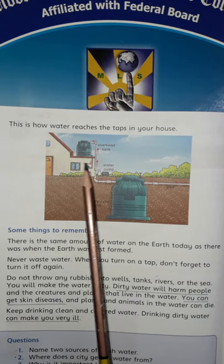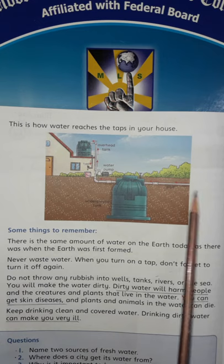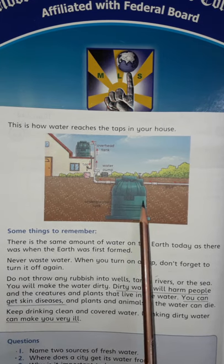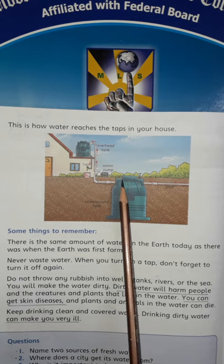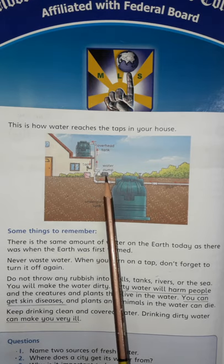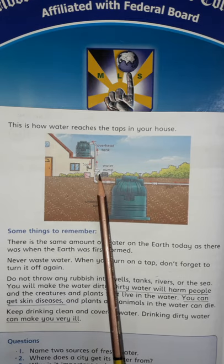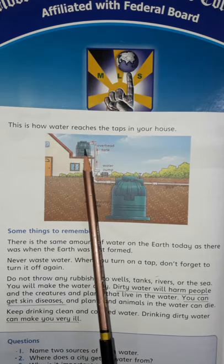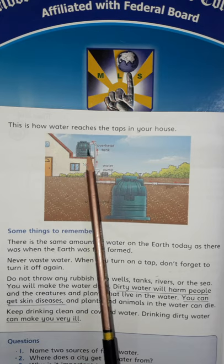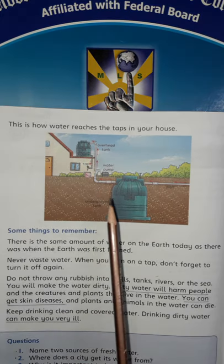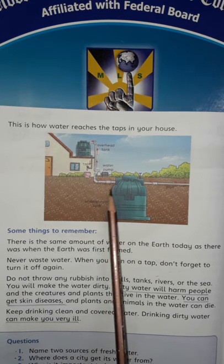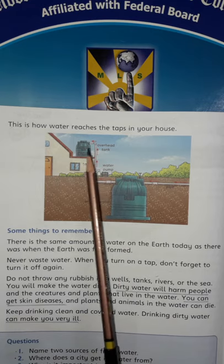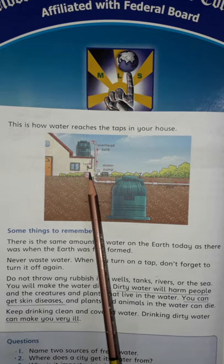This is how water reaches the taps in your house. Water comes in a pipe to an underground tank. From the underground tank, it goes to a water pump. The water pump takes it to an overhead tank, and from that overhead tank, the water comes out of the tap. The order is: underground tank, water pump, overhead tank, and then tap.